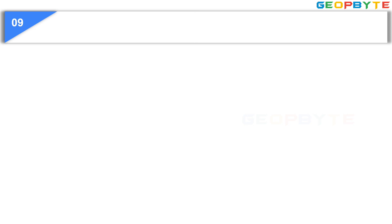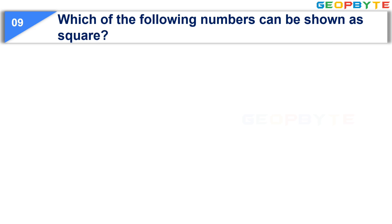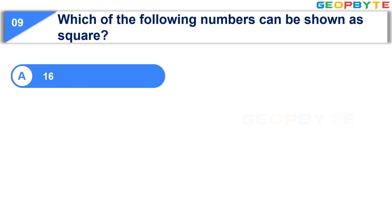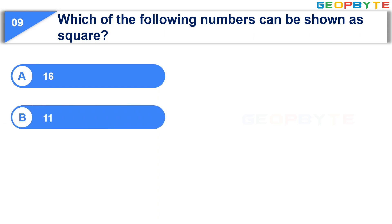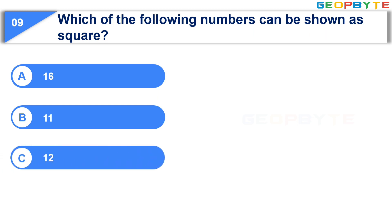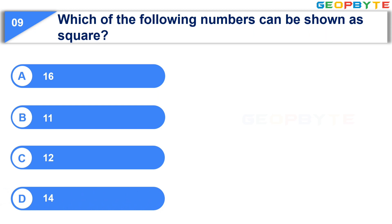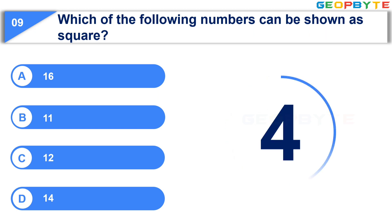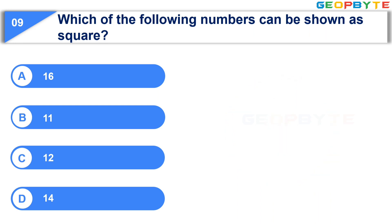The 9th question is: Which of the following numbers can be shown as a square? Option A: 16. Option B: 11. Option C: 12. Option D: 14. Your time starts now. Your time is up and the correct answer is Option A, 16.